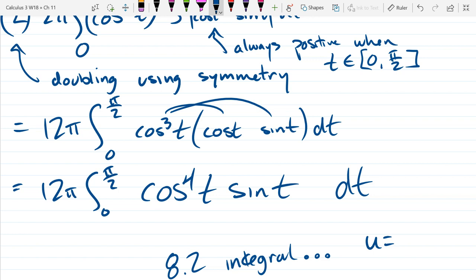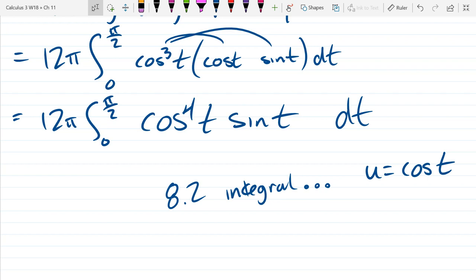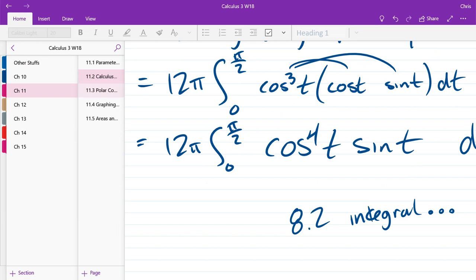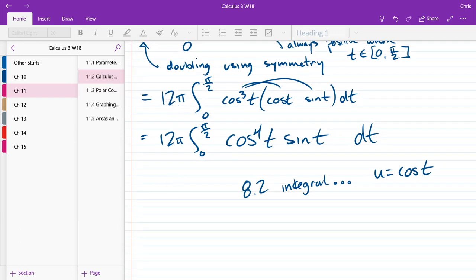So u equals sine. Uh-oh. Right. Oh no, u equals cos. No, this one's even easier. U equals cos, so you got u⁴du, basically. So this would be, I think, one of the first two cases where you got an odd trig function. So next section, hopefully you remember polar coordinates.